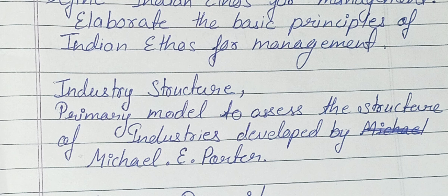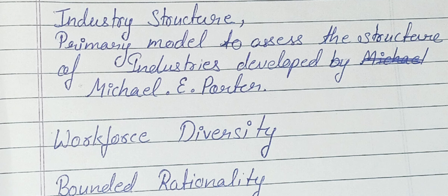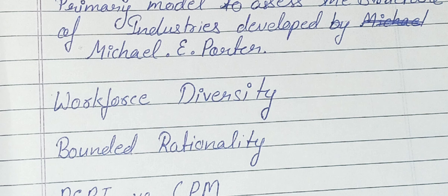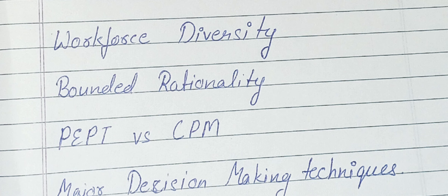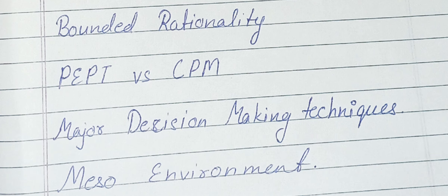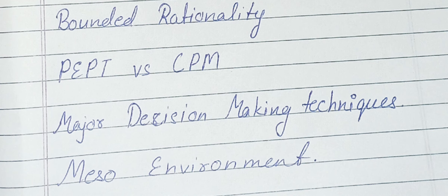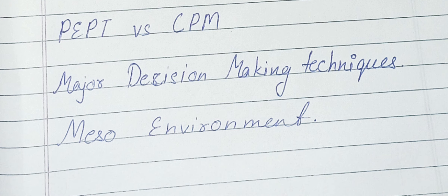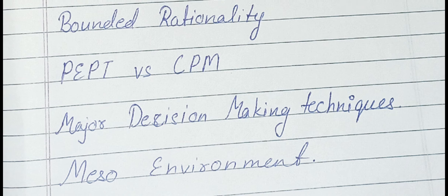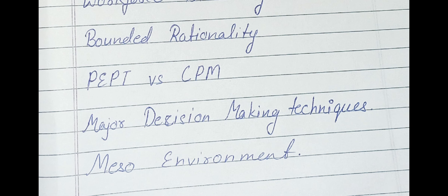Then our industry structure and the primary model to assess the structure of industries developed by Michael E. Porter. Then our workforce diversity, bounded rationality, PERT vs CPM, and major decision-making techniques.